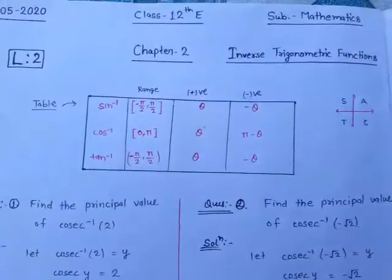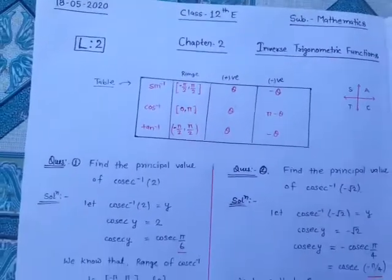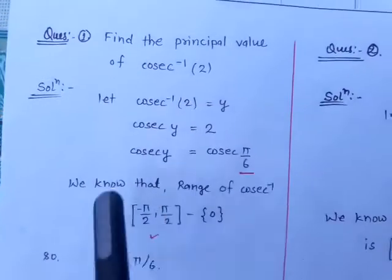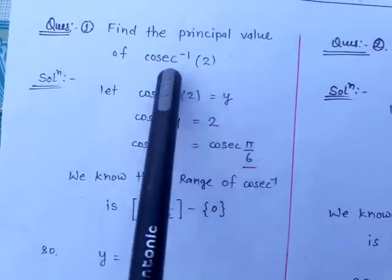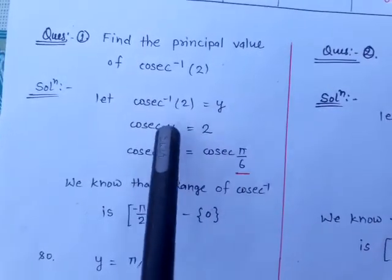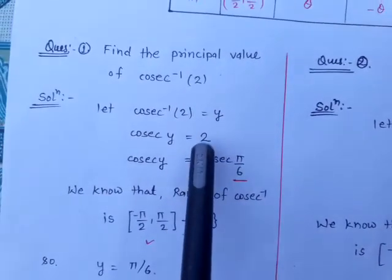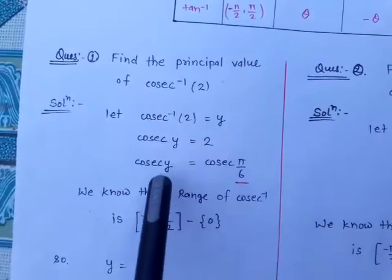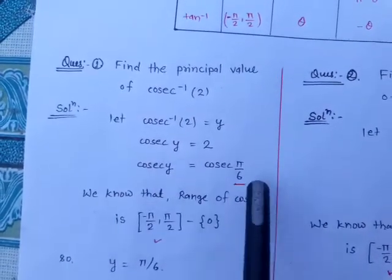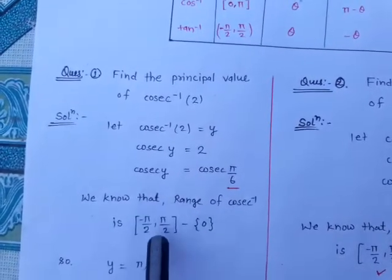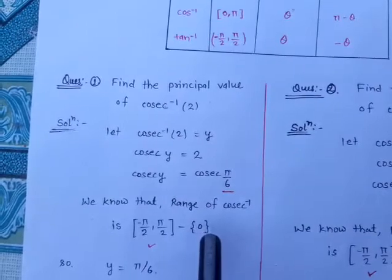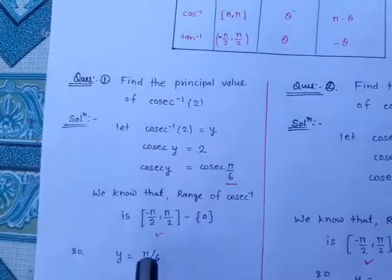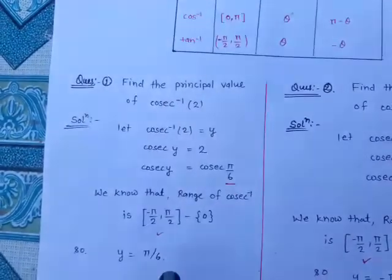Now we move to the first question: find the principal value of cosec⁻¹(2). Let cosec⁻¹(2) = y, so cosec y = 2. We know cosec(π/6) = 2, so cosec y = cosec(π/6). Checking the range of cosec inverse, which is [−π/2, π/2] minus {0}, π/6 belongs to this range. Therefore y = π/6, that is the principal value of cosec⁻¹(2) is π/6.